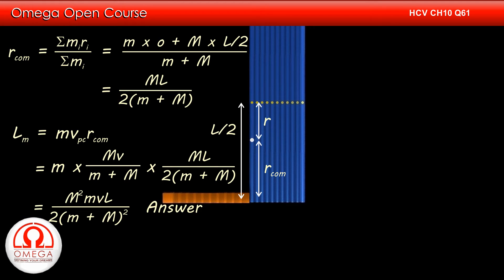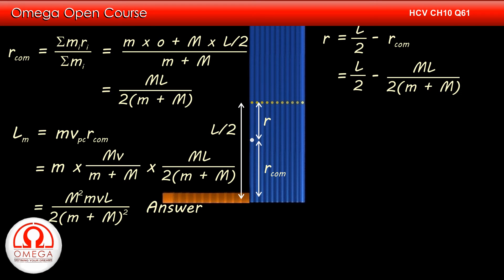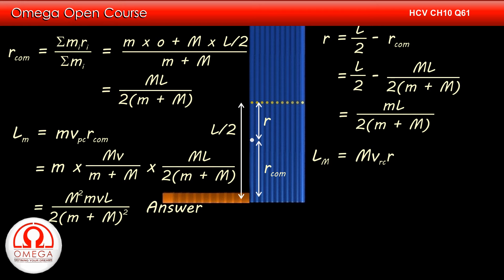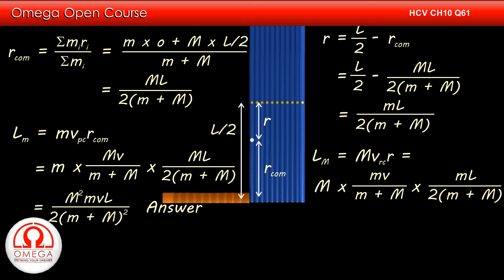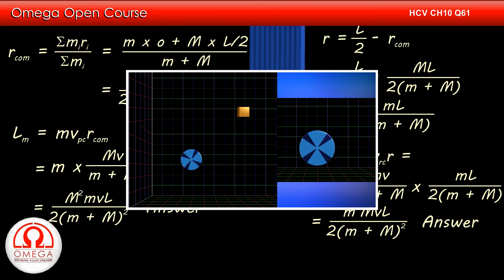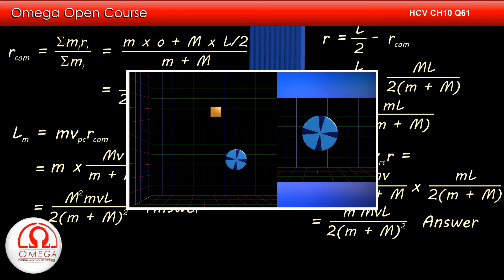The distance of the line of motion of the centre of the rod from the centre of mass is L/2 minus ML/(2(m+M)), which simplifies to mL/(2(m+M)). Since before the collision, in the frame of the centre of mass the rod was in pure translation, its angular momentum about the centre of mass of the system is M times its velocity with respect to the centre of mass times the distance of its line of motion from the centre of mass. Putting the values: M · mv/(m+M) · mL/(2(m+M)), which gives m²MvL / (2(m+M)²). This is the answer to part D.